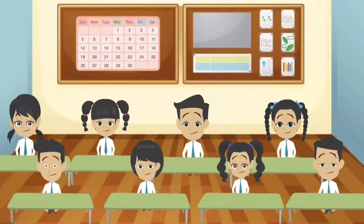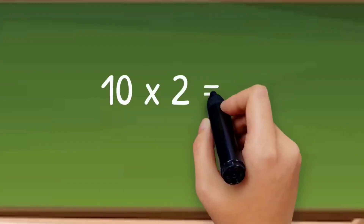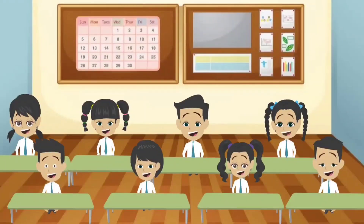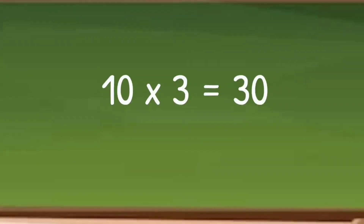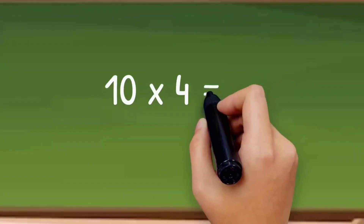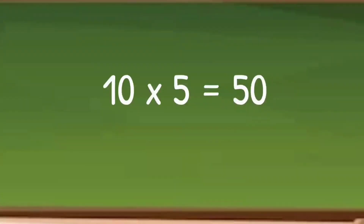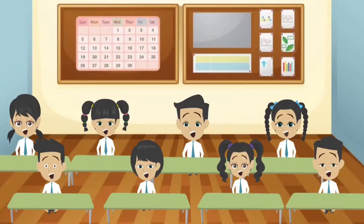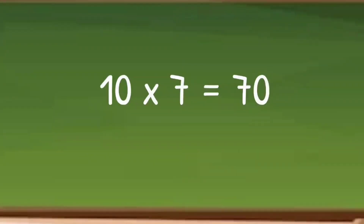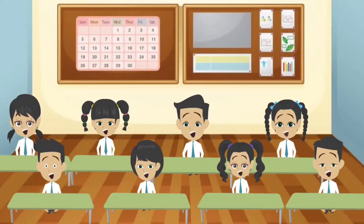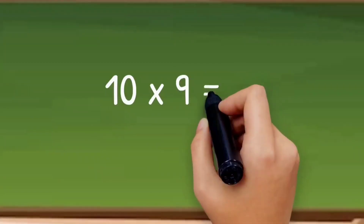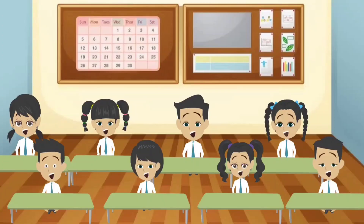Let's learn table of 10. 10 ones are 10. 10 twos are 20. 10 threes are 30. 10 fours are 40. 10 fives are 50. 10 sixes are 60. 10 sevens are 70. 10 eights are 80. 10 nines are 90. 10 tens are 100.